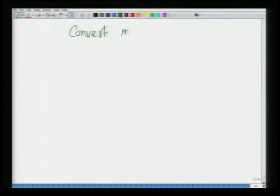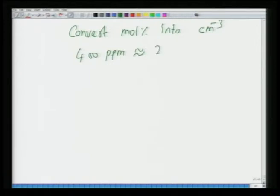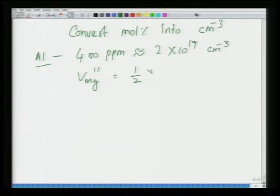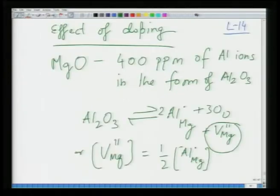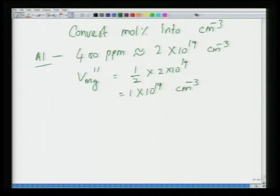Using simple principles you can convert mole percent into per centimeter cube. 400 ppm works out to about 2×10¹⁹ per cm³ for aluminum concentration. Since Al_Mg equals twice V_Mg, V_Mg is half of Al_Mg, giving V_Mg ≈ 1×10¹⁹ per cm³.